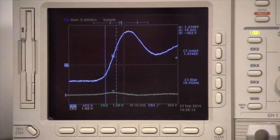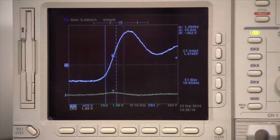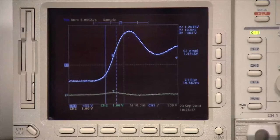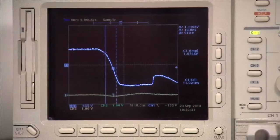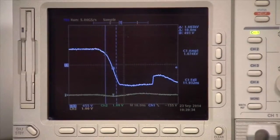As you can see, the CMTI for positive common mode transient is 100 kV per microsecond. For negative transient, CMTI at logic low is also 100 kV per microsecond.